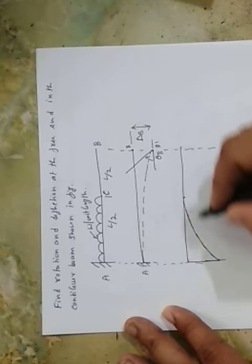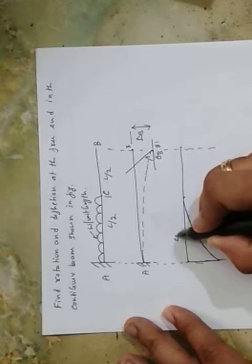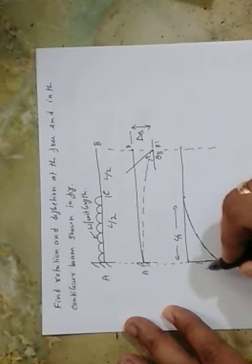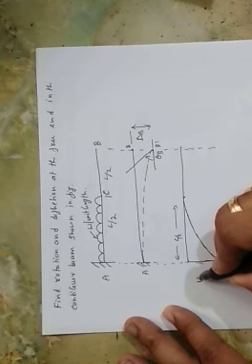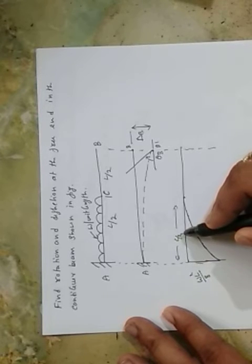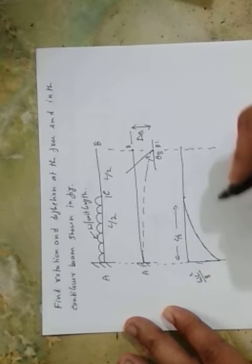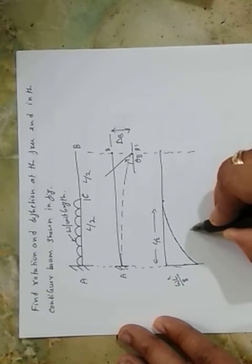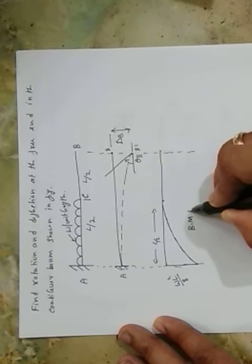So be careful. If you work out, this bending moment at the free end is WL²/8, because WL²/2 times L/2, so if you substitute, you will get WL²/8. This is what is the bending moment diagram.